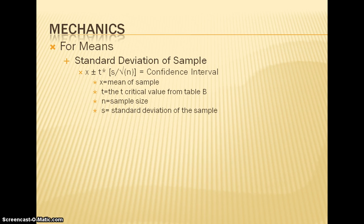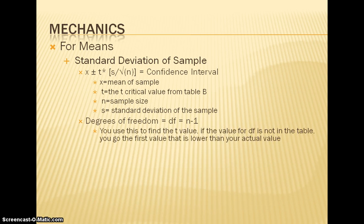When you find t, you must know the degrees of freedom. Degrees of freedom, which is df, is equal to n minus 1. And that is part of the list in table B when you are trying to find your t value. You use degrees of freedom to find this t value. If the value for df is not in the table, you go to the first value that is lower than your actual value.